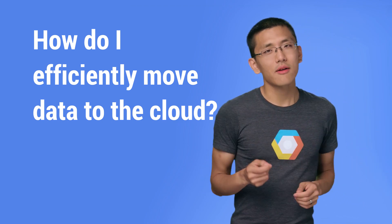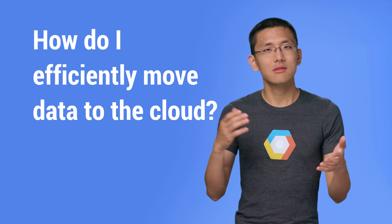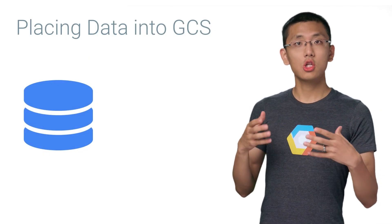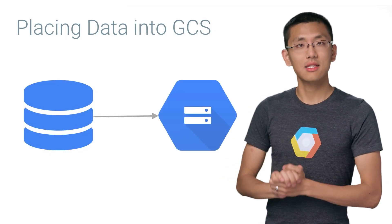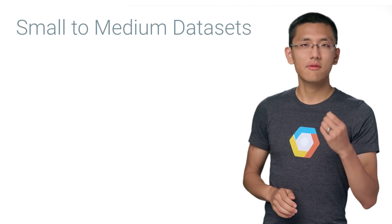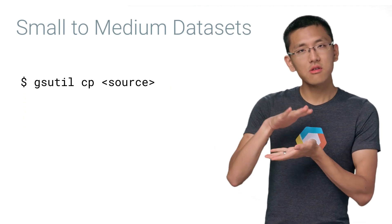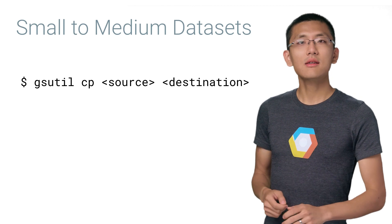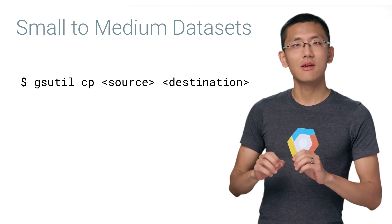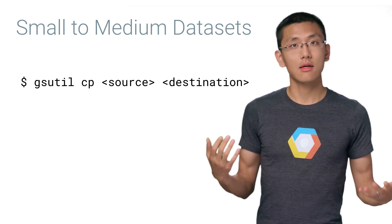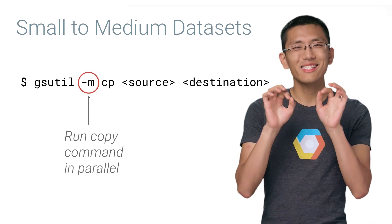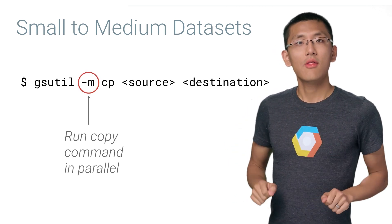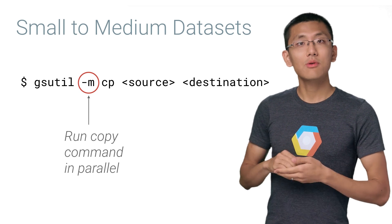Google Cloud Platform has a couple of easy ways to tie together these abstractions. First, we'll want to make sure that our data is on Google Cloud Storage, or GCS. We can do this using a variety of tools. For smaller to medium data sets, just use gsutil — a command line tool specifically made for interacting with Google Cloud Storage. It supports a -m option that allows for sending multiple streams in parallel, speeding up your transfer job.